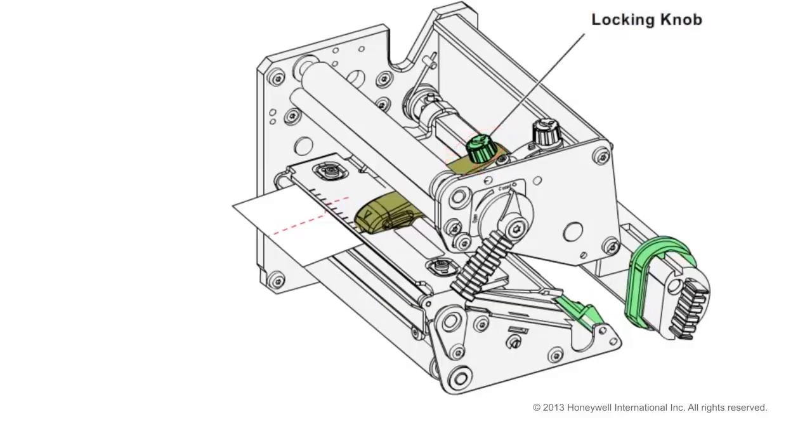Loosen the locking knob that holds the pressure arm in place by rotating it counter or anti-clockwise. A small screwdriver may assist you in performing this action.